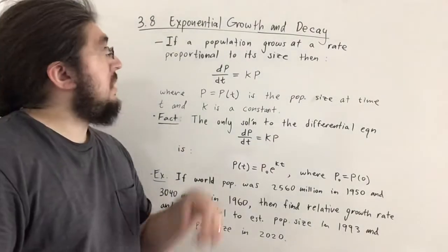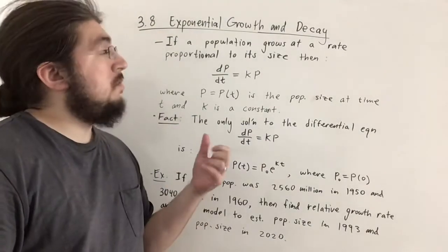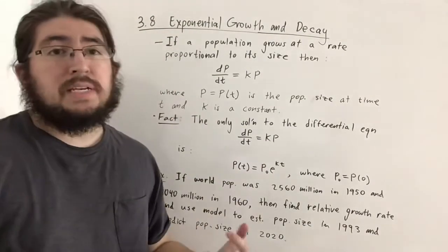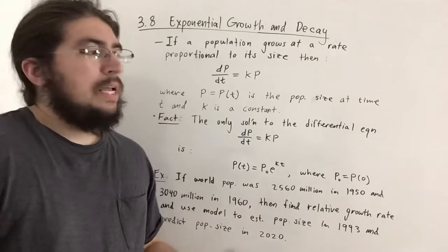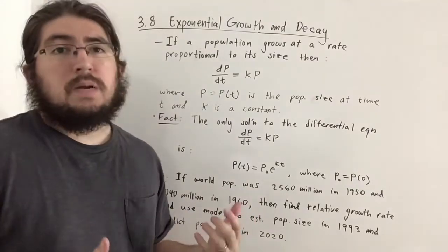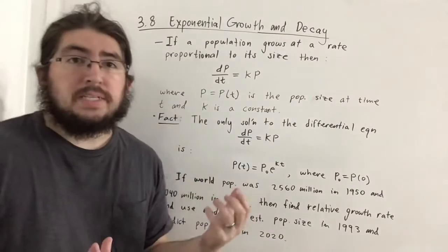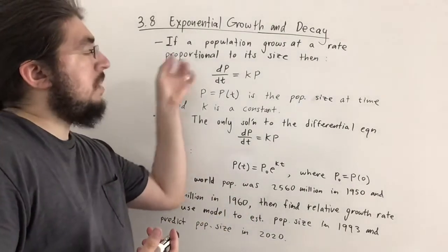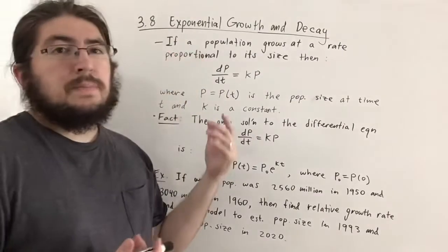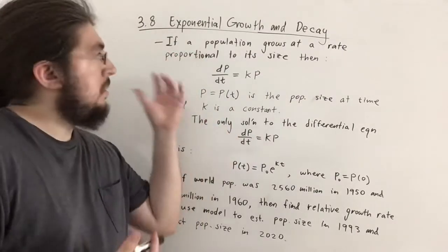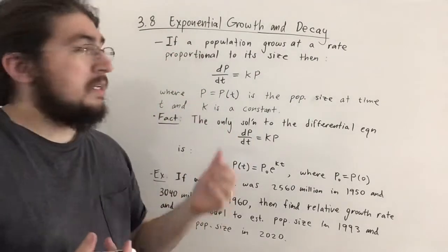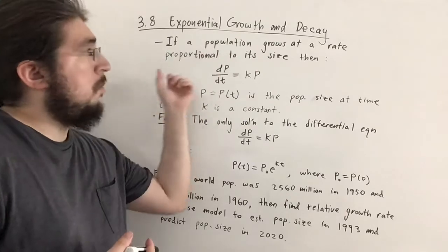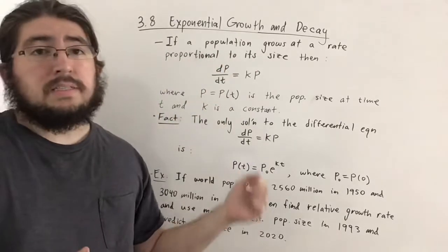Hello everyone. Here we'll be discussing section 3.8, which is a topic on exponential growth and decay. The first thing I want to talk about is population growth. We're making the assumption that a population grows at a rate proportional to its size.